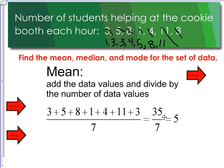So in this case we'd have 35 is the sum divided by 7, which equals 5. So our mean would be 5.